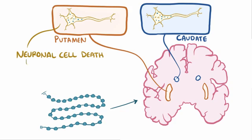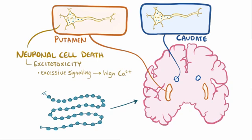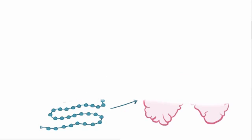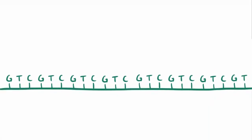Cell death might be related to excitotoxicity, which is excessive signaling of these neurons, which leads to high intracellular calcium. The expanded CAG repeats not only affect the Huntington protein — they also affect DNA replication itself.